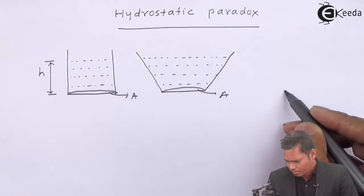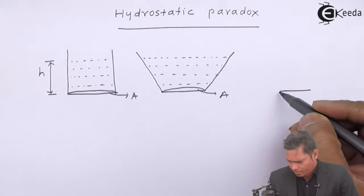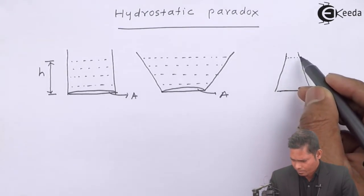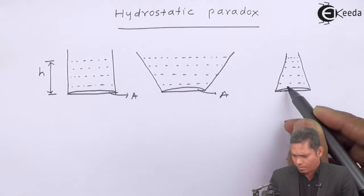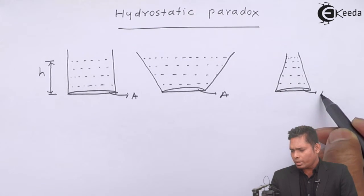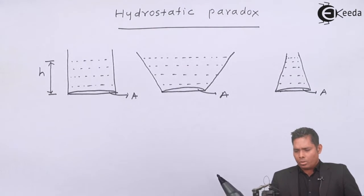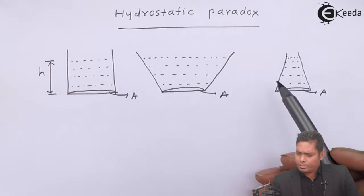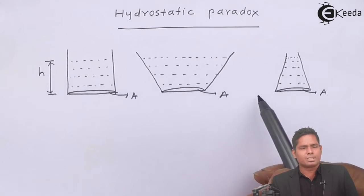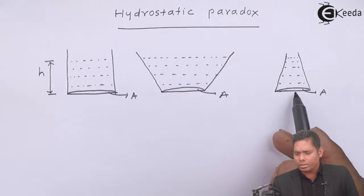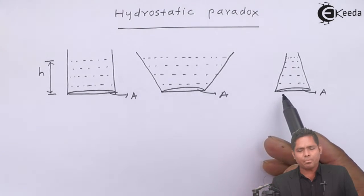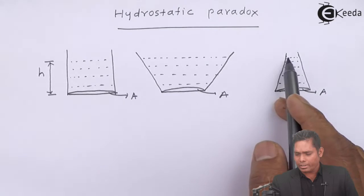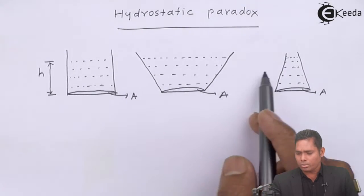The third vessel is also considered, with area A, but with walls inclined inward. So now we can see that the three different vessels have the same area of cross section — the base area is same — and the vertical height of the liquid is also the same: H in each vessel.